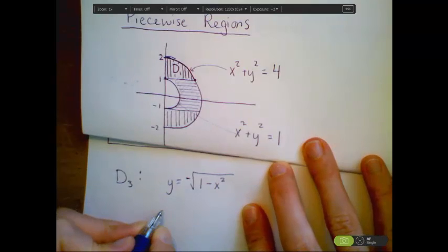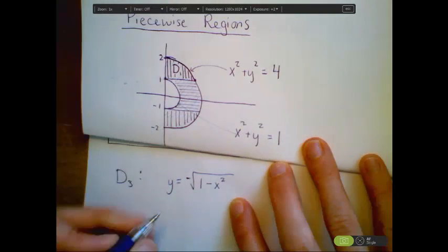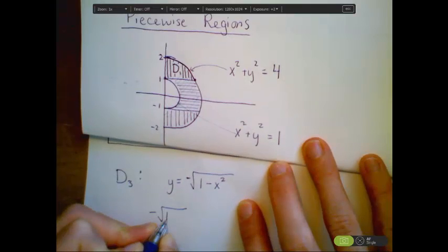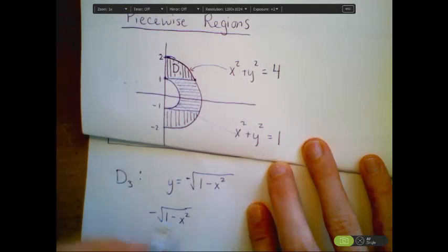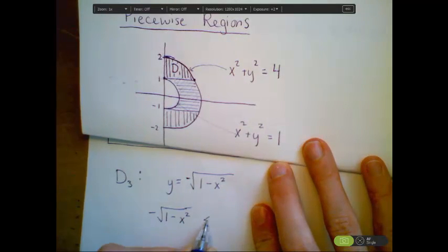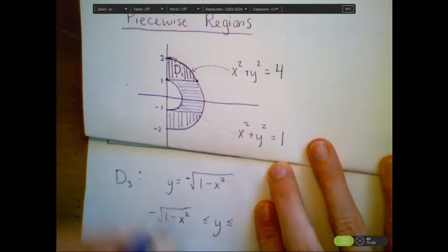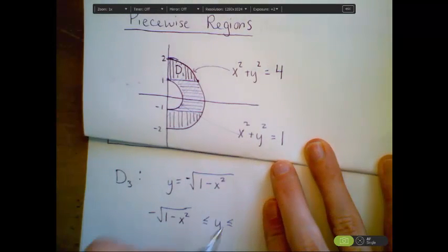So our bounds on y, this is our lower bound. y's go from negative square root of 1 minus x squared is less than or equal to y is less than or equal to the upper bound in this case is negative 1.